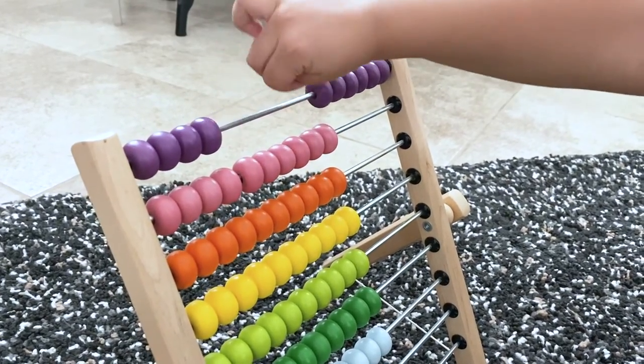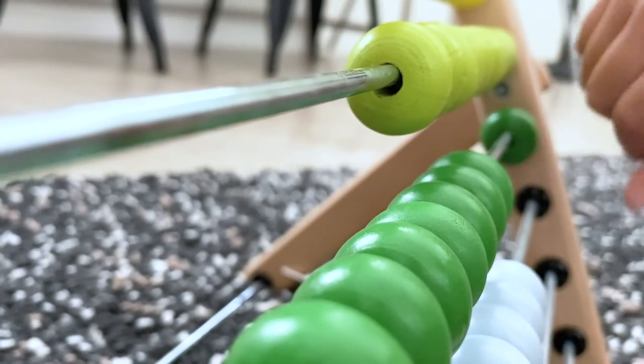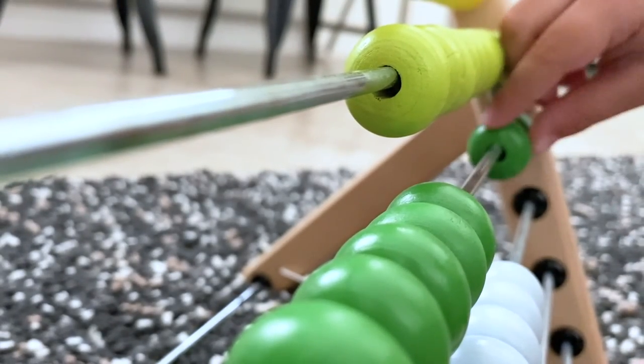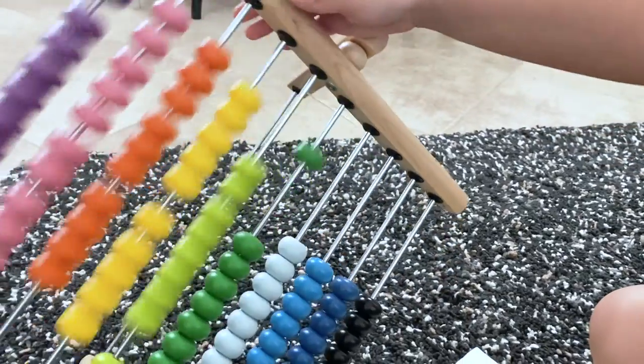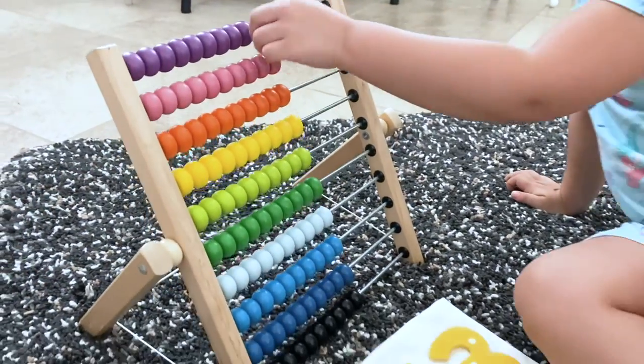After they read the number, it's time to count it. Sometimes my daughter likes to count the abacus beads by herself. Sometimes she likes me to take turns counting with her. This game is a favorite in our house and a fun way to visualize written numbers.